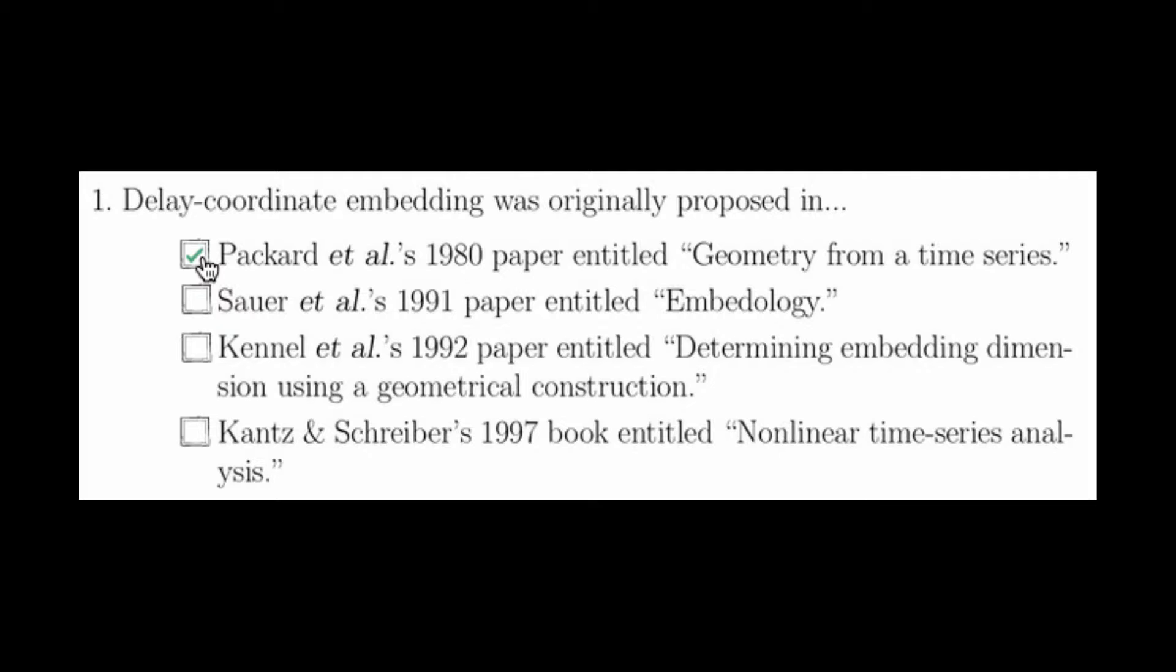The Kennel et al. paper, titled Determining Embedding Dimension Using a Geometrical Construction, is the original false nearest neighbor paper. And Kantz & Schreiber's 1997 book entitled Nonlinear Time Series Analysis, is a very general textbook on nonlinear time series analysis.